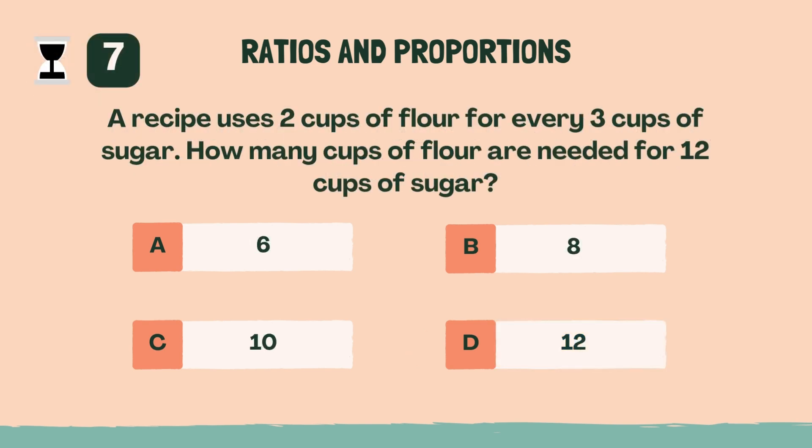A recipe uses two cups of flour for every three cups of sugar. How many cups of flour are needed for twelve cups of sugar? B, eight.